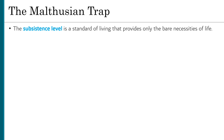The subsistence level is a standard of living that provides only the bare necessities of life — that is, people are getting just what they need to keep on living. In the late 1700s, the English economist Thomas Malthus laid out a mathematical explanation for why we would never be able to escape mass poverty. Here's the gist of his theory.